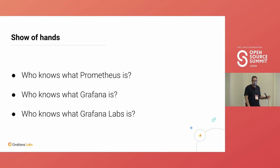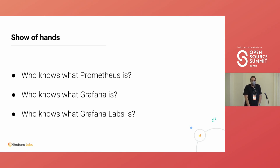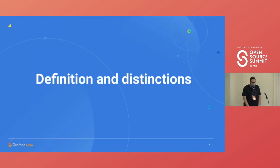Grafana Labs has an open source first strategy which you might or might not be aware of. This is about how we think about communities, how we engage with them, how we maintain our projects, and how we keep being successful. The company is worth billions and billions of dollars, so it's not unsuccessful.